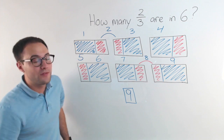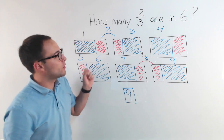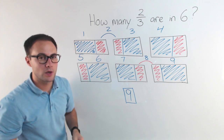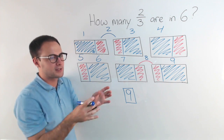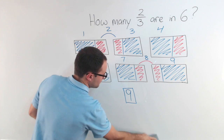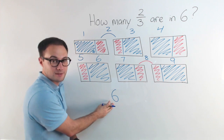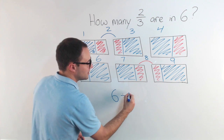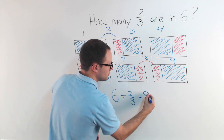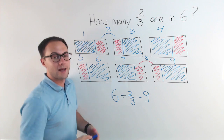Now we've got to think — what did we actually do here? We had six candy bars and we broke them into groups of two-thirds. When we have a whole bunch of stuff and we break them into groups, we're dividing. So this problem we can write as six divided by two-thirds, and we just found that is equal to nine. Let's look at some more examples and figure out why that is.